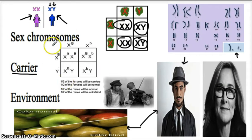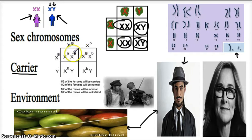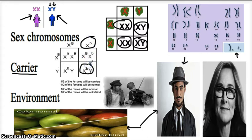You can see in this Punnett square that the female is along the top and is the carrier of colorblindness. When that happens, there is a 1 in 4 chance of a male — XY — being colorblind. Females have dominant and recessive alleles for these traits, so they typically carry without being affected.